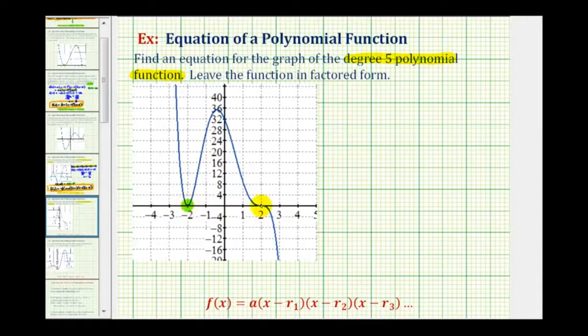Notice the graph only has two x-intercepts, one here at negative two and another here at positive two. But because of how the graph behaves, the multiplicity of these roots is not equal to one.